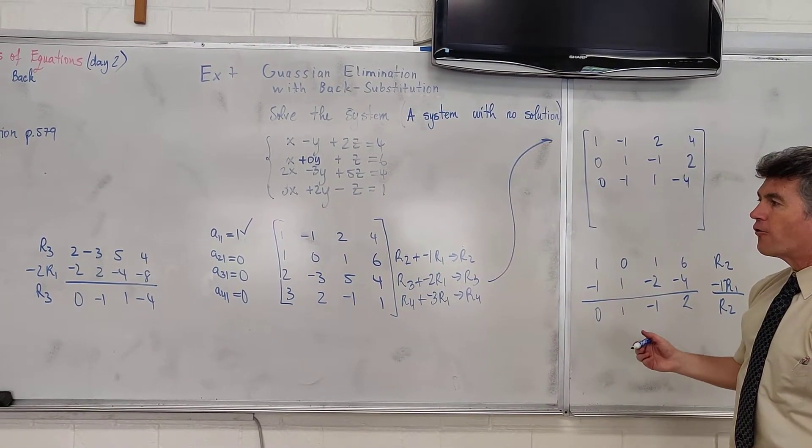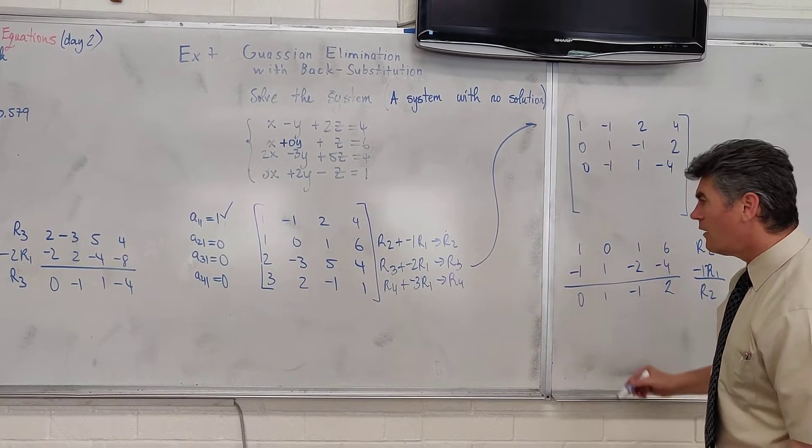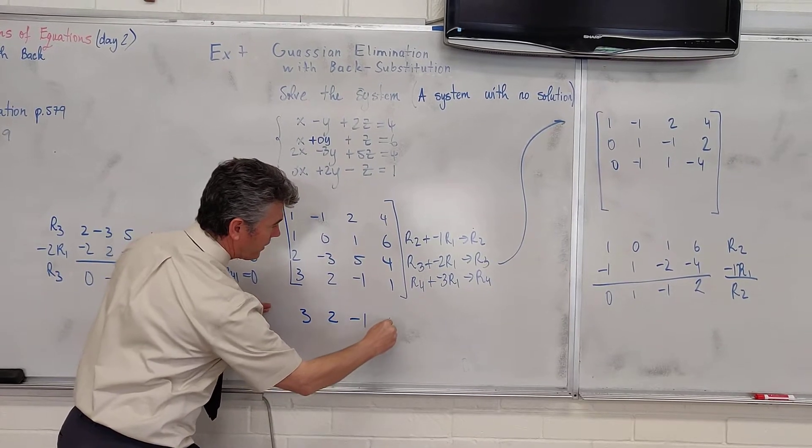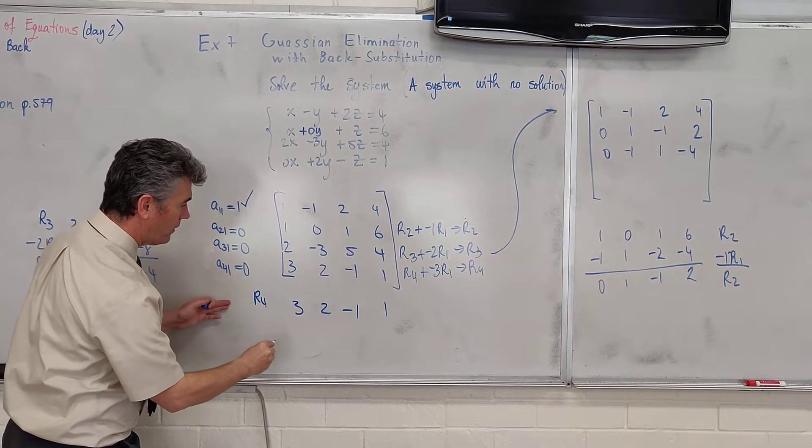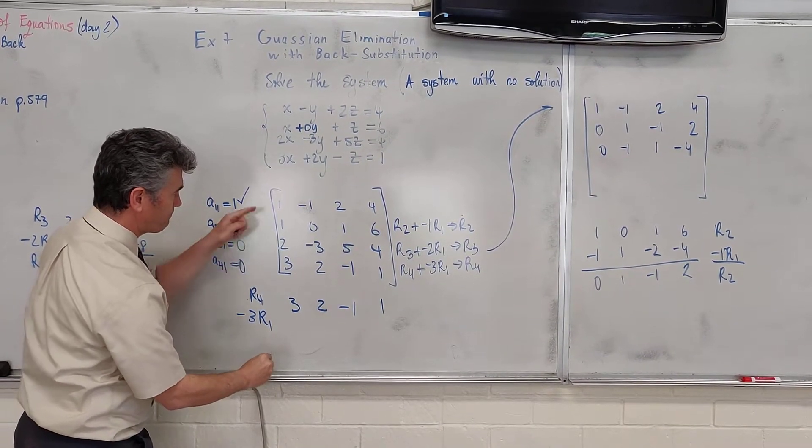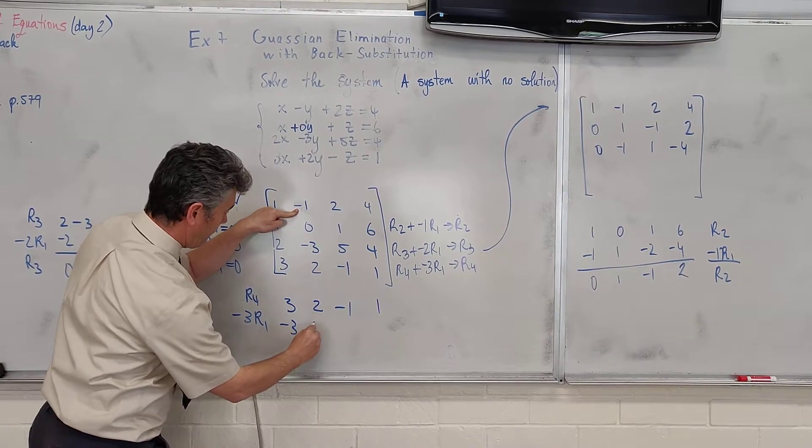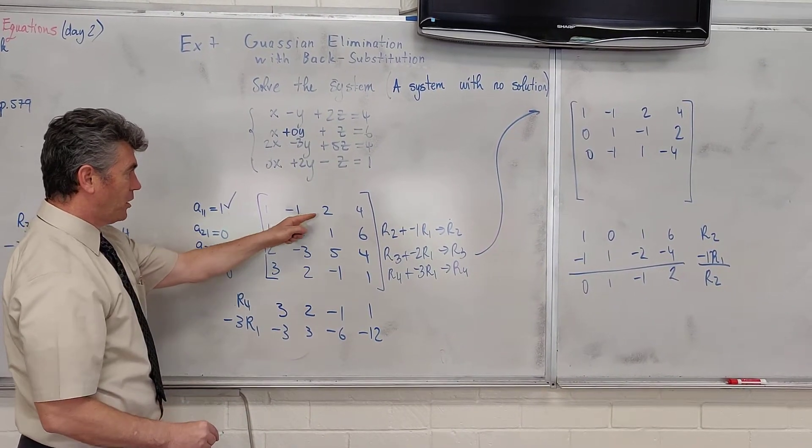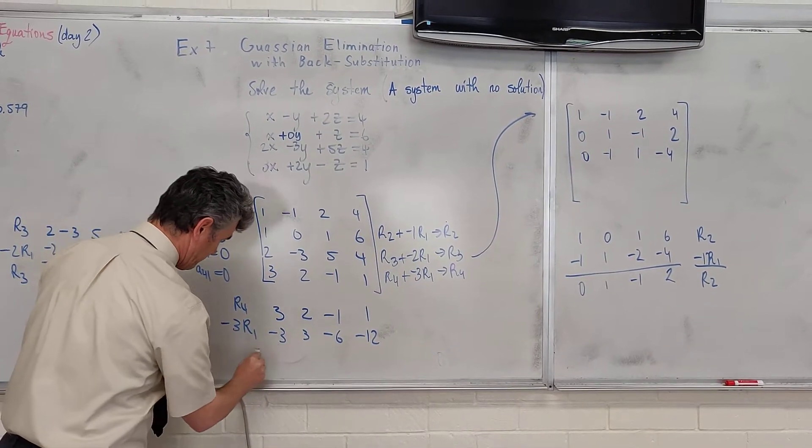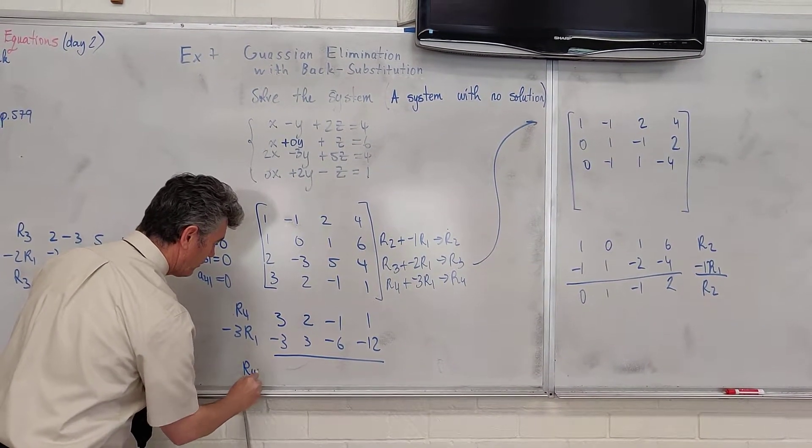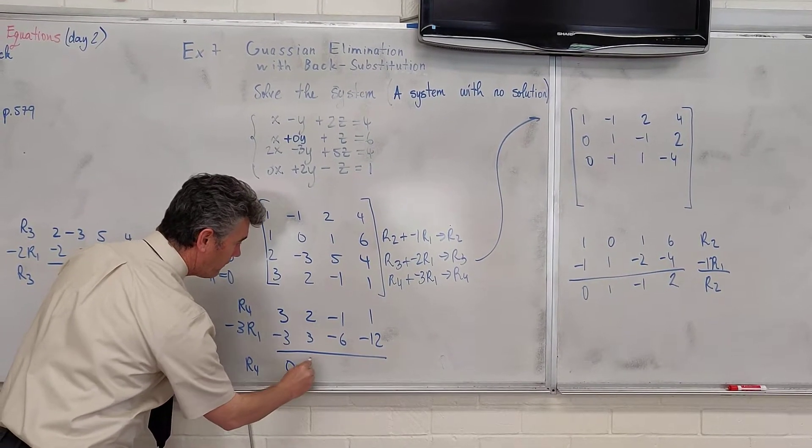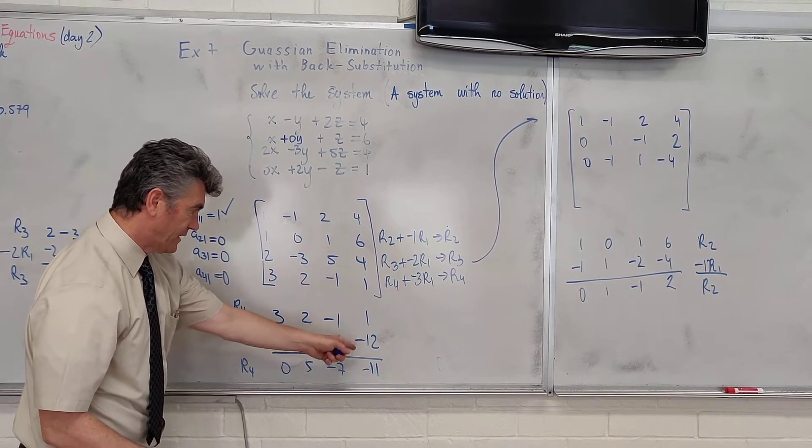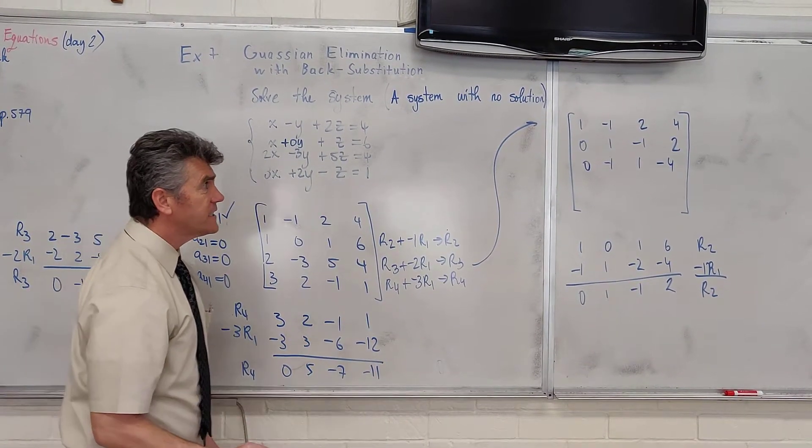And finally, we want row 4 plus negative 3 row 1. So row 4: 3, 2, negative 1 and 1. There is our row 4. And we want to add to it negative 3 row 1. Negative 3, positive 3, negative 6 and negative 12. Quickly check. Add up and get a new row 4. 0, 5, negative 7 and negative 11. Check again. 0, 5, negative 7, negative 11. Everything is good. There is our new row 4.